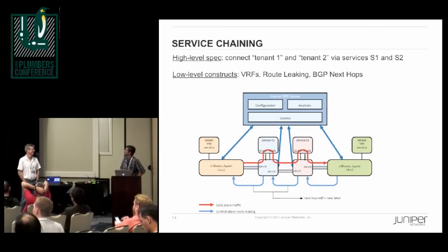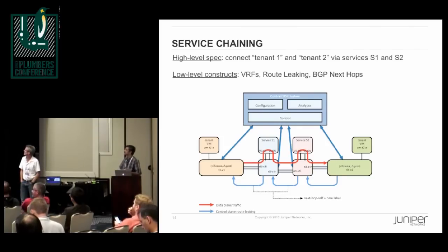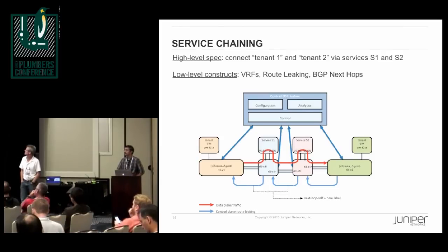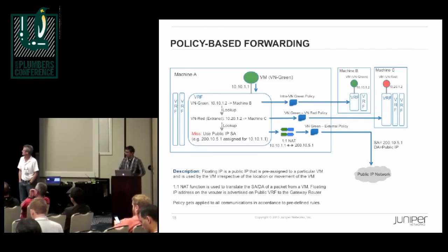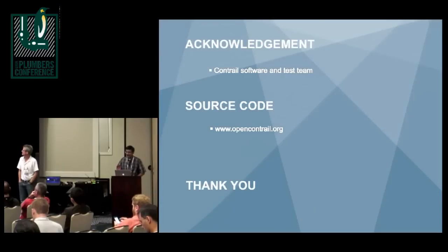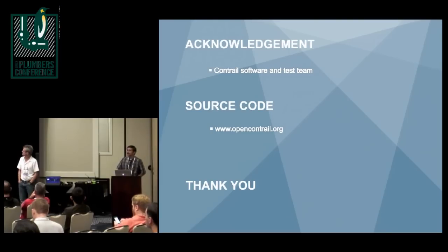We support service chaining, so a packet can be sent from a VM to a service such as a firewall, from there to a load balancer, and then to the destination VM — all orchestrated by the control plane using BGP. We also support policy-based forwarding: we have a flow table where you can have policies to accept, deny, or do NAT on packets. Most of what I presented today is work done by other people in the Contrail team, so I want to acknowledge that. Our source code is on opencontrail.org. Thank you.